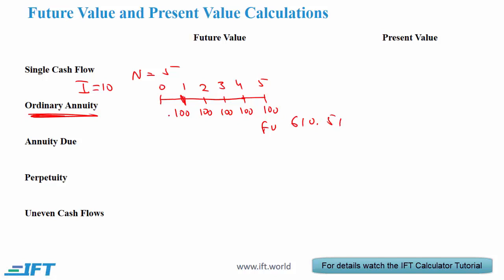For this ordinary annuity we can also compute the present value. Here we set N to 5, interest rate to 10, FV to 0 because there is no payment other than $100 at the end of year 5. When we calculate the present value we will get 379.08.